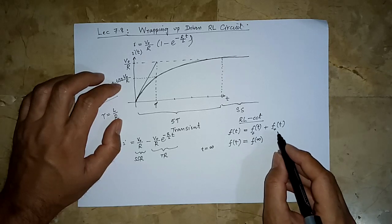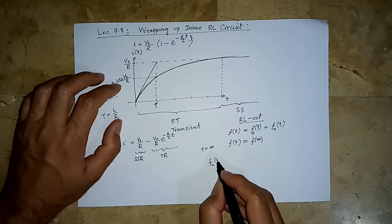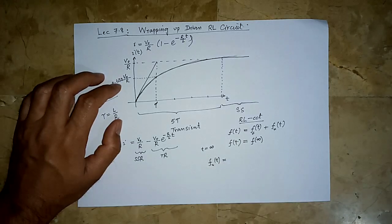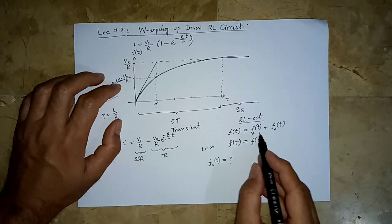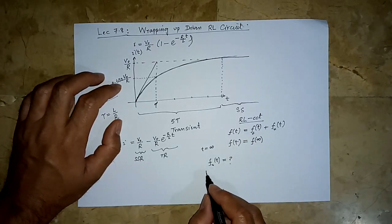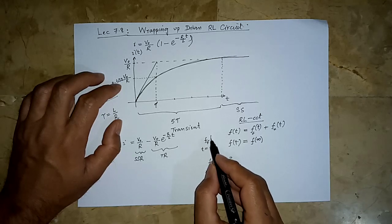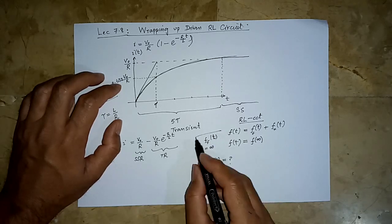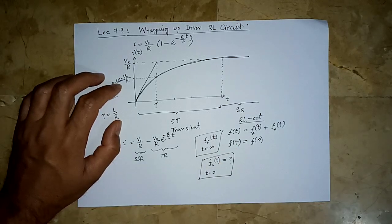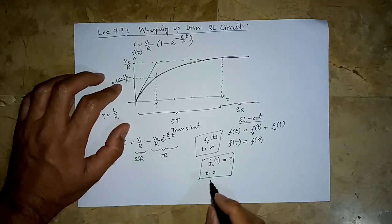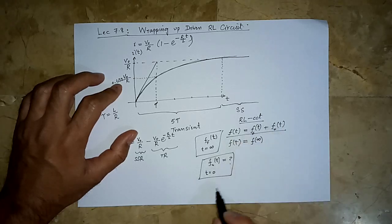And this natural response part — in the previous video we saw how to compute this. So we put T equal to 0 for the forced or steady-state part, we put T equal to infinity. And in the natural response part, we also put T equal to infinity. This Fn will always be of the form: a constant A times e raised to the power minus T over tau. Tau for an RL circuit is L over R. So in the complete response, we put T equal to zero.